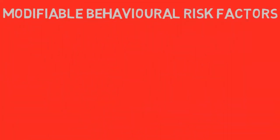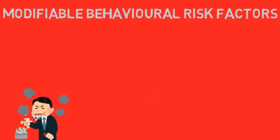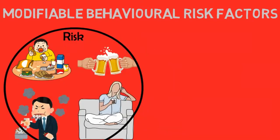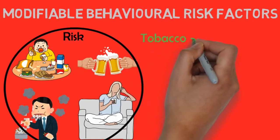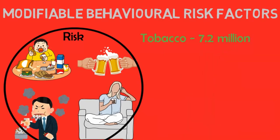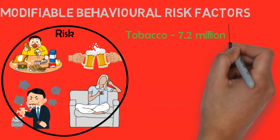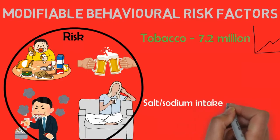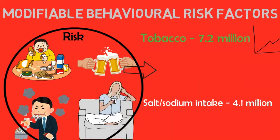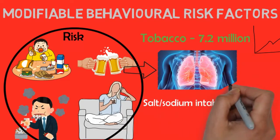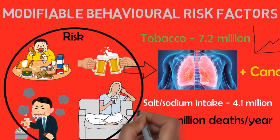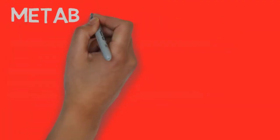Risk factors for non-communicable diseases include modifiable behavioral risk factors and metabolic risk factors. Modifiable behaviors such as tobacco use, physical inactivity, unhealthy diet, and the harmful use of alcohol all increase the risk of NCDs. Tobacco accounts for over 7.2 million deaths every year, including from the effects of secondhand smoke exposure, and is projected to increase markedly. 4.1 million annual deaths have been attributed to excess salt and sodium intake. More than half of the 3.3 million annual deaths attributed to alcohol use are from cardiovascular diseases, including cancer. And 1.6 million deaths annually can be attributed to insufficient physical activity.